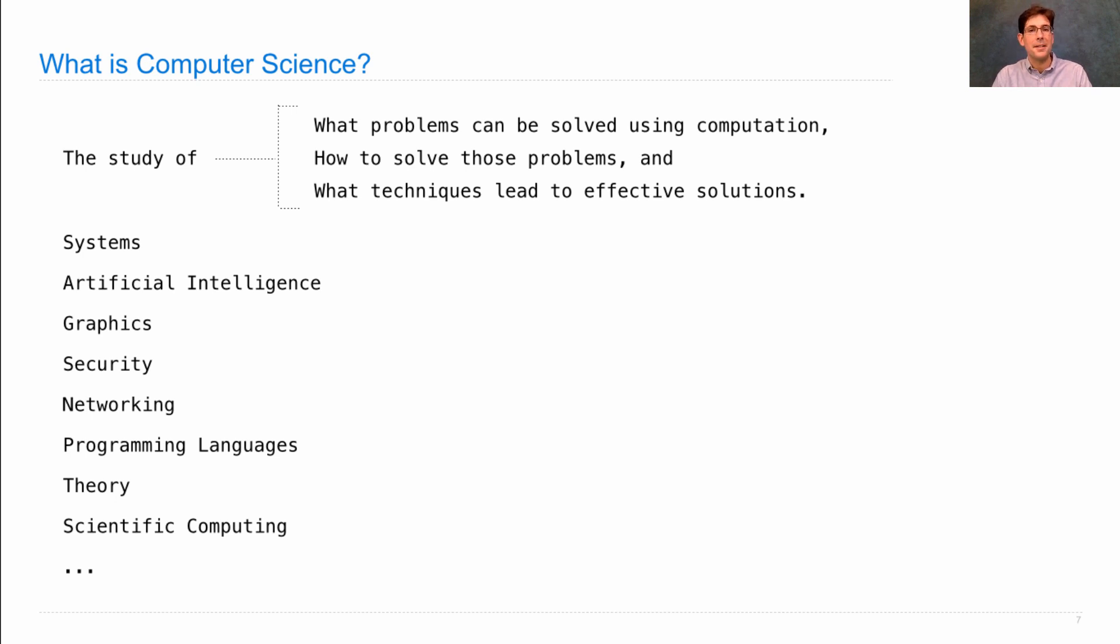But it's worse. There's actually, within each subfield of computer science, many different sub-subfields. So within artificial intelligence, some people study decision-making. The best chess player, the best checkers player, the best scrabble player in the world are all computers.